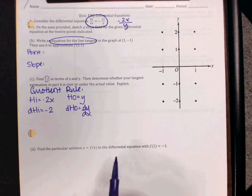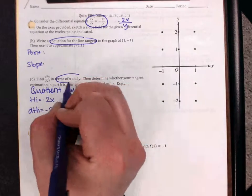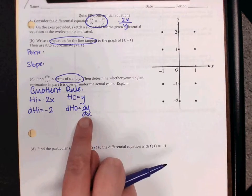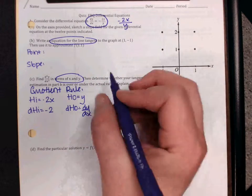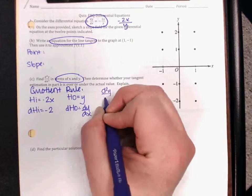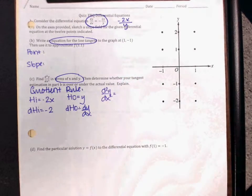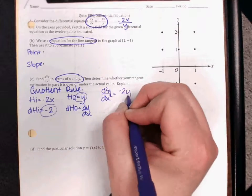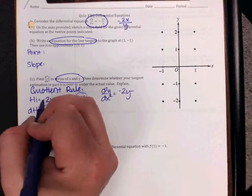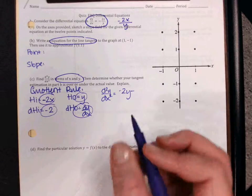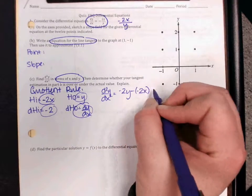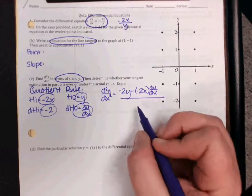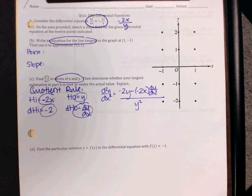Now the next thing I want to point out to you is that it says in terms of x and y. So when I write my derivative, I'm not going to be able to leave this dy dx here. I'm going to have to change it. So it'll be d squared y dx squared equals, and then it's ho d high, so that's negative 2y minus.